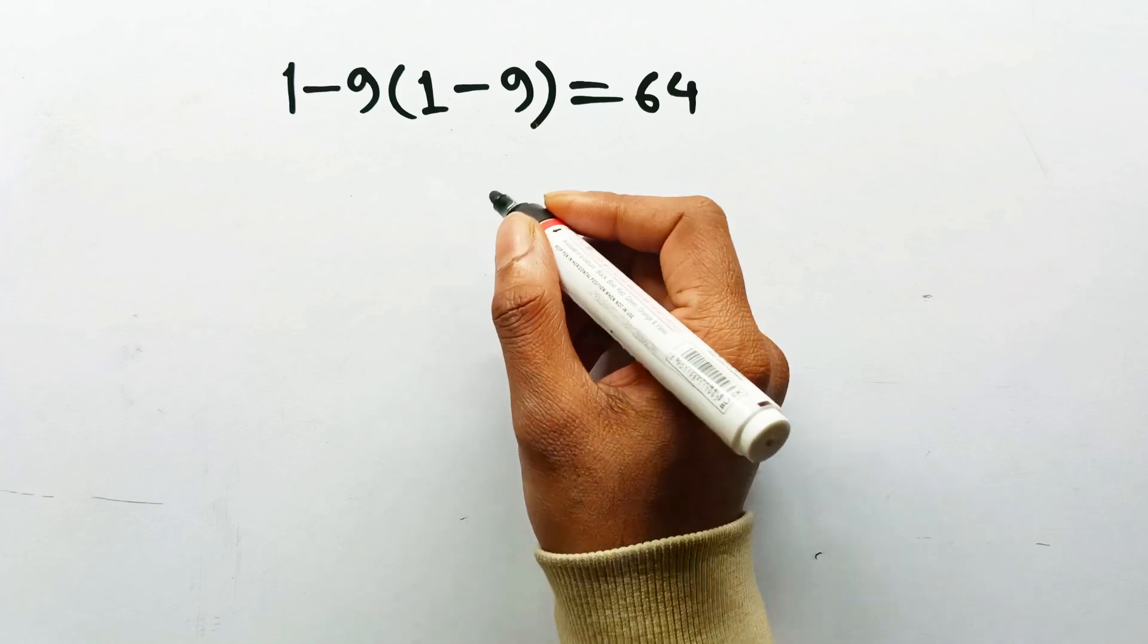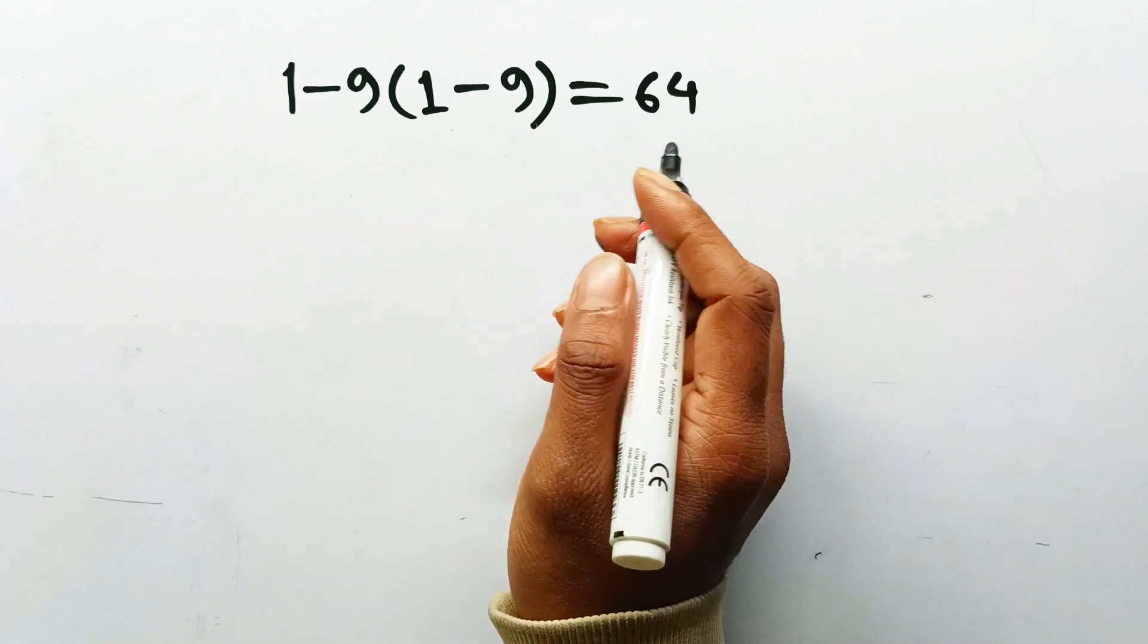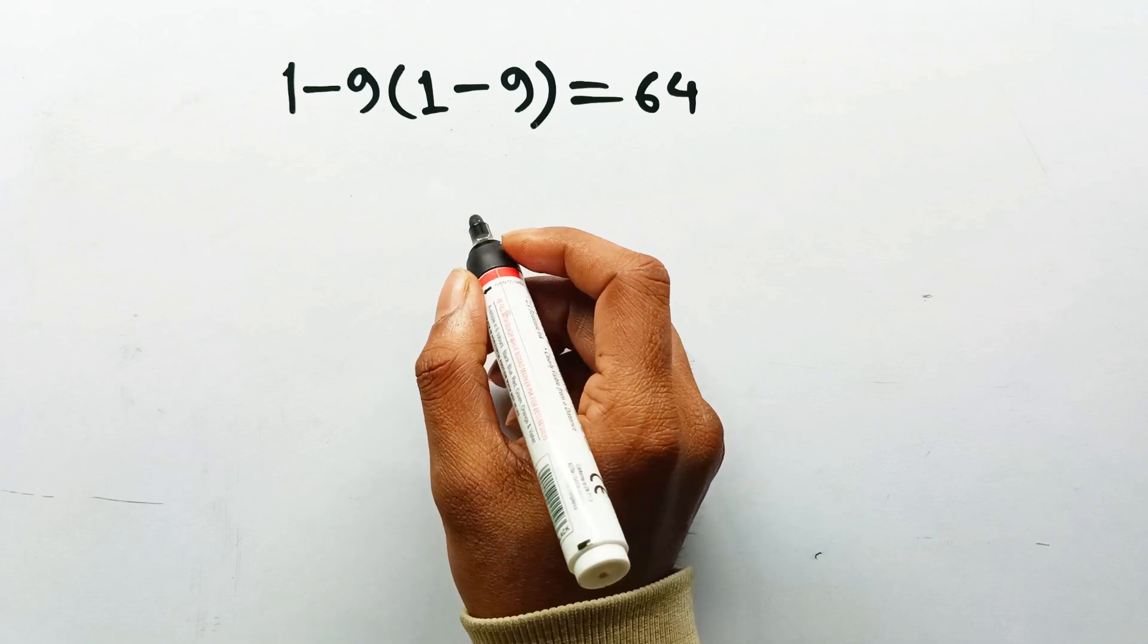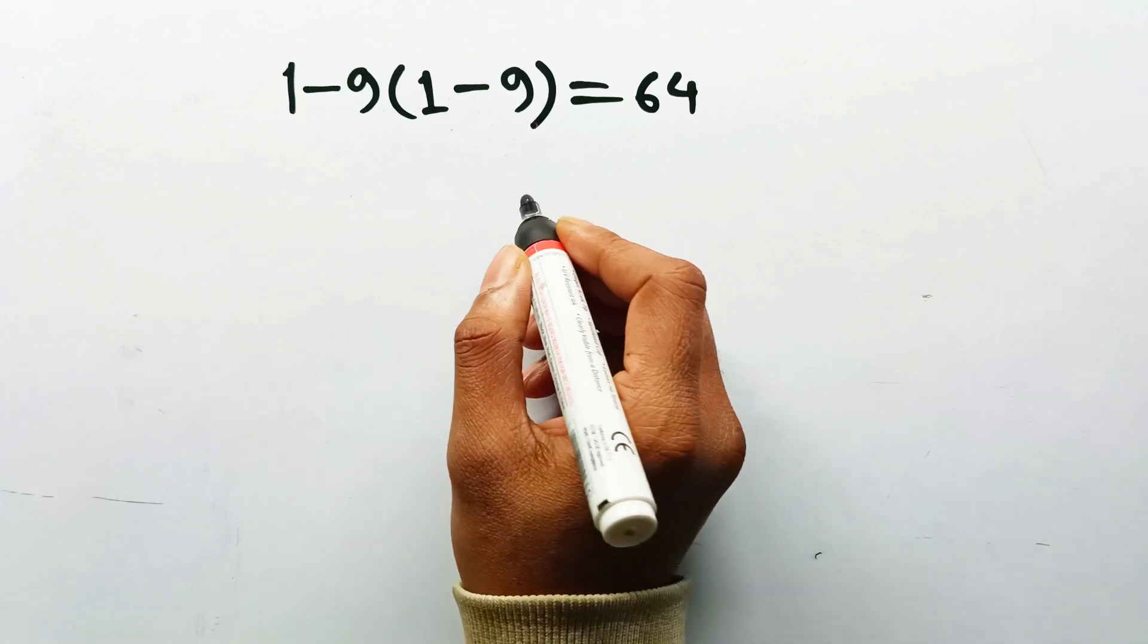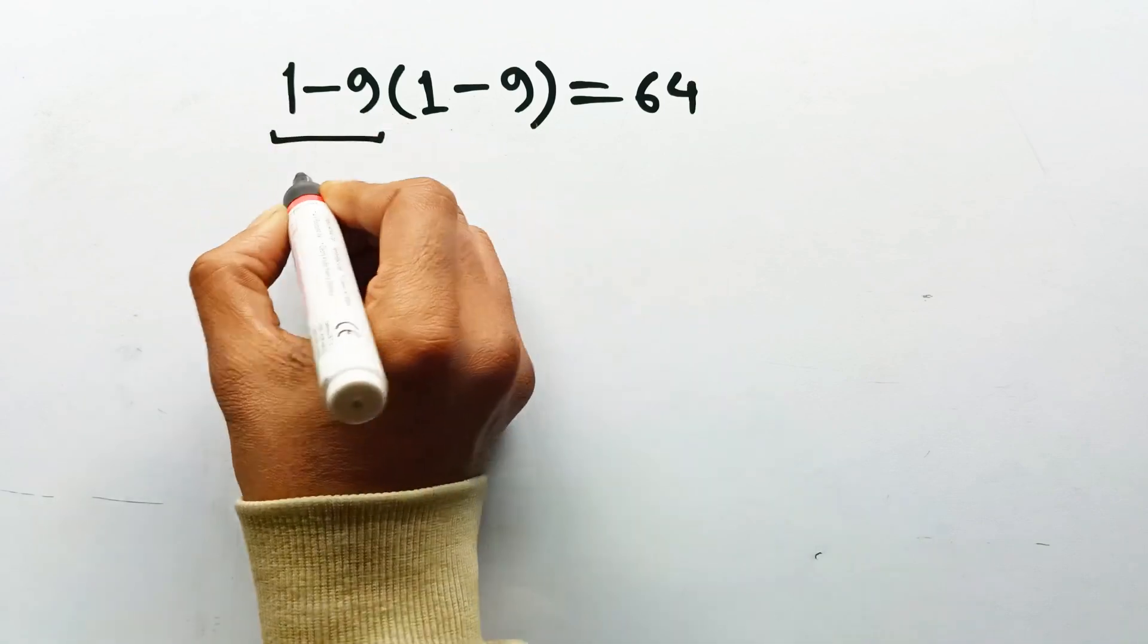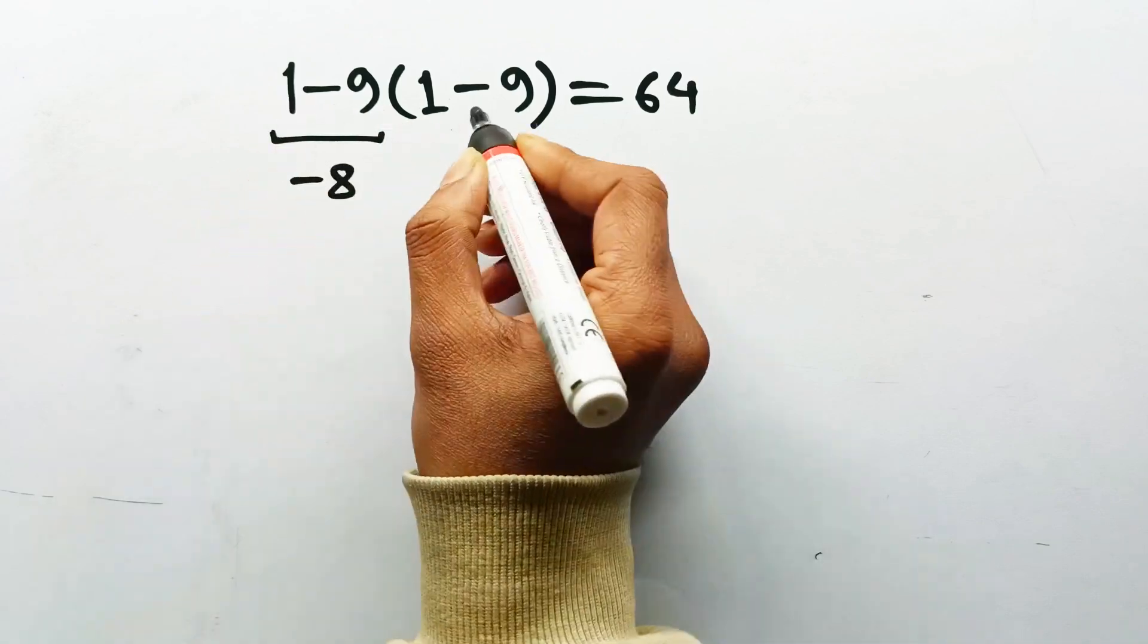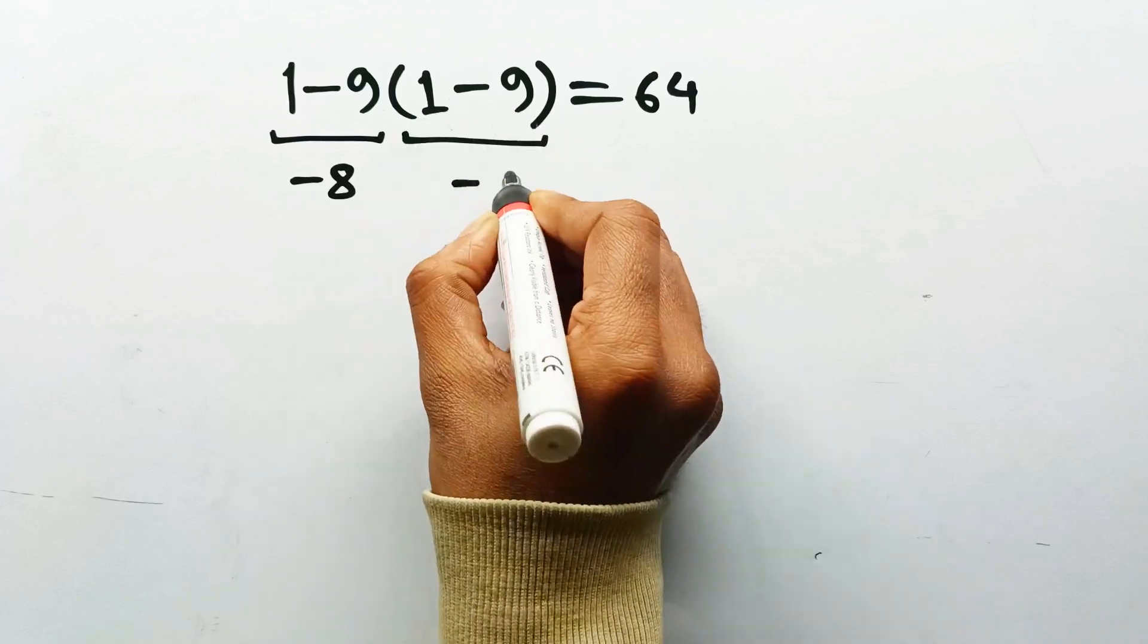Yeah, no, that solution is confident, fast, and completely disrespectful to math rules. Let's walk through the wrong logic first, because this is exactly how most people get trapped. You look at the left side, do 1 minus 9, get negative 8. Then you look inside the parentheses, do 1 minus 9 again, also negative 8.